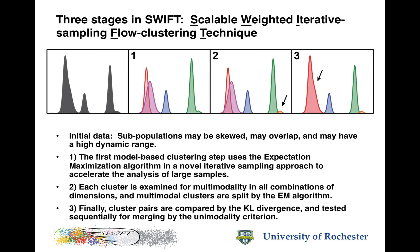There are three stages in Swift that help the program achieve good separation of all the subpopulations. In the first stage, the expectation maximization algorithm is used in a novel iterative sampling procedure to fit the data to a specified number of Gaussian distributions. At the end of this step, many of the populations may be described very well, but there may be some examples where a small subpopulation is not well separated from a neighboring much larger population.